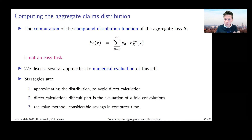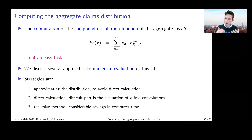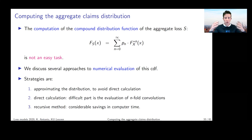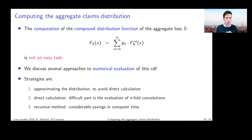You can see at the bottom a couple of strategies that the risk modeler could follow. One strategy is to approximate the distribution — get grip on the first and second moment of S, then use a normal approximation or log-normal approximation, matching the first and second moments of the true distribution of S with the moments of the approximating distribution. That's a strategy that is sometimes followed.